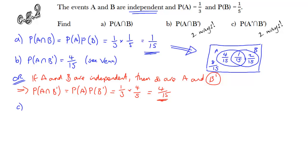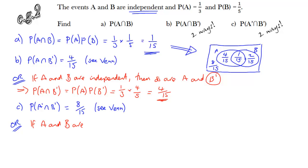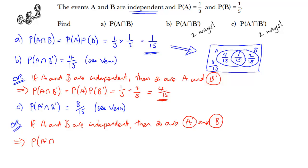Part C: the intersection of not B with not A. That is the region where A does not occur and B does not occur — clearly the 8/15 region around the outside. If A and B are independent events, then not A and not B are also independent events. So the probability of the intersection of not A with not B is simply P(not A) times P(not B). Not A is 2/3 and not B is 4/5. Multiplying those together gives the same answer of 8/15.